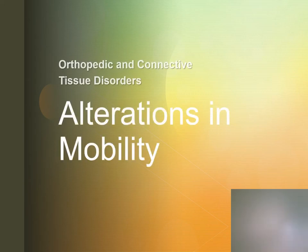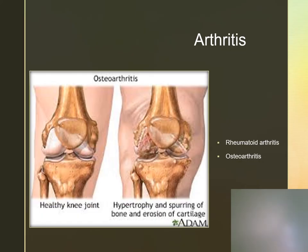Alterations in Mobility: Orthopedic and Connective Tissue Disorders. Arthritis is characterized by inflammation and degeneration of a joint. We often see this with rheumatoid disorders and osteoarthritis.